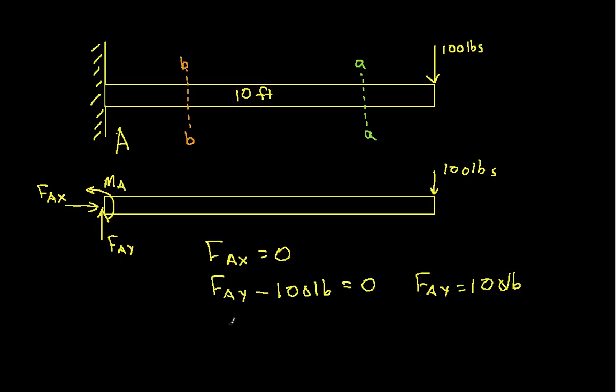And finally, the moments we have, let's look at the moments about point A. We have MA minus 100 pounds, that's basically this force here, it's acting on a moment arm of 10 feet. And that's equal to 0, which tells us that MA is equal to 1,000 foot-pounds. So there you have it. We now know what the forces on the beam are.